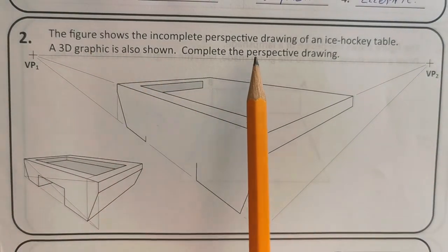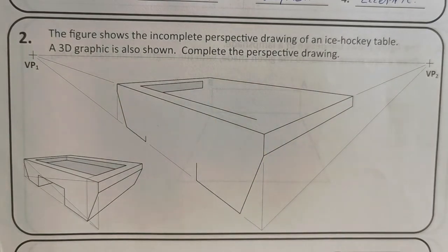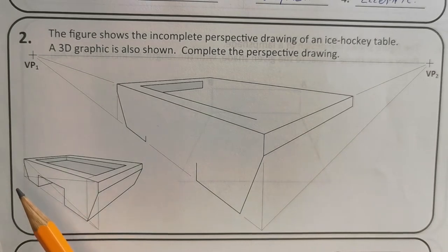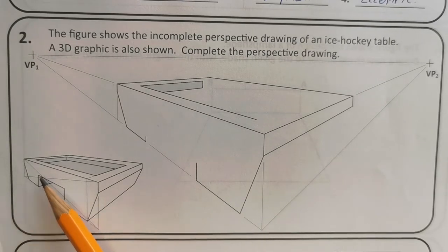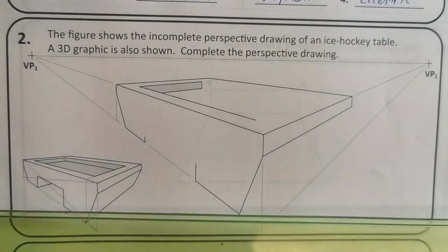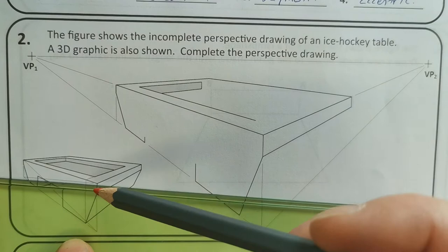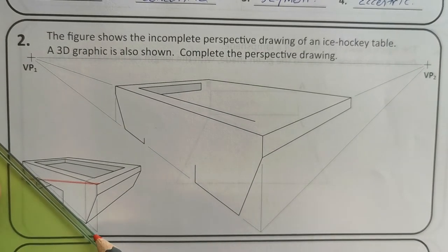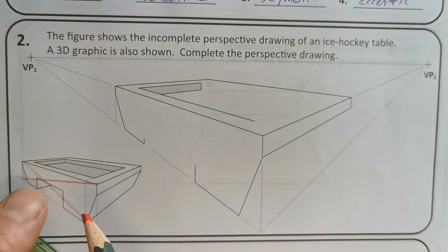Question two is a perspective drawing and it's very important to look at the pictorial because there's always information given in it. What I'd be taking note of here is the top height of the tunnel. You can see there's an X in the pictorial — I could highlight it with a colouring pencil — this X is giving us the top of that tunnel cut into the ice hockey table.